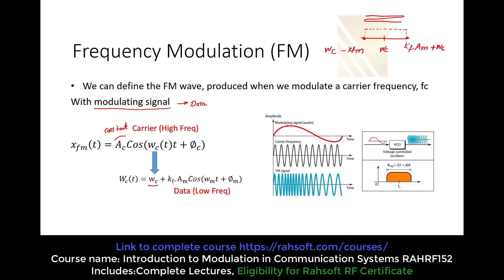This is the modulating signal — the baseband or data as we discussed. This is our carrier frequency. As you can see in this picture, when the modulating signal increases, the frequency of the carrier increases. So for that range we have a higher frequency. But as we decrease the modulating signal, the frequency goes low, and we are going to have a lower frequency — the frequency is decreasing, getting lower and lower.